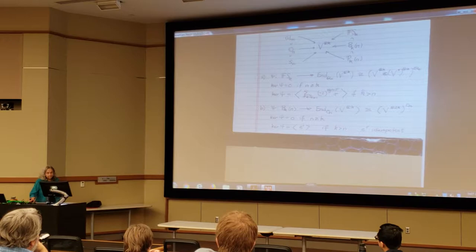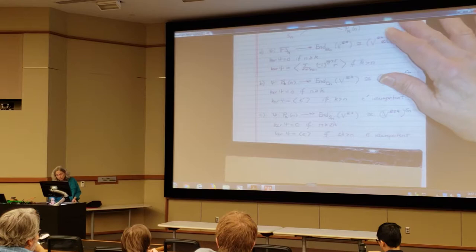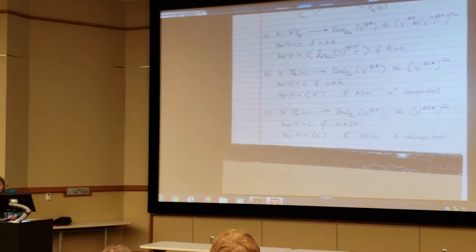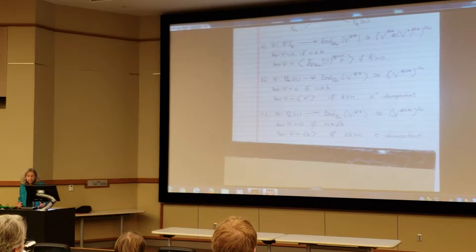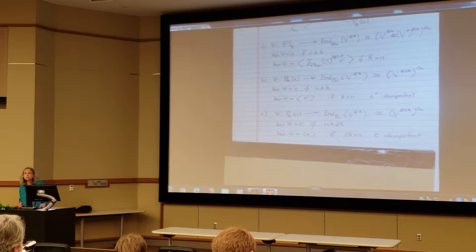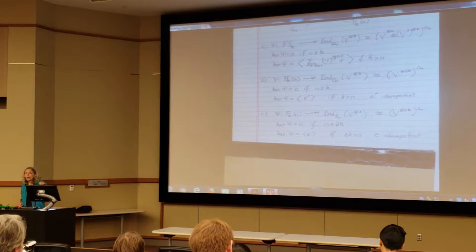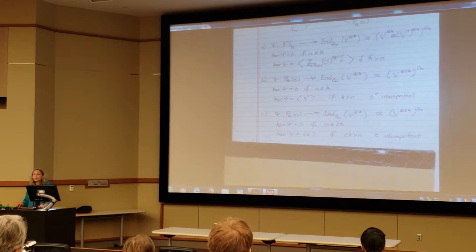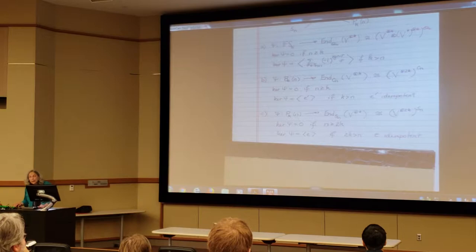What about the partition algebra case? Well, a very similar thing is happening. V is isomorphic to its dual here. And so when we're looking at the centralizer algebra, we're really looking at invariants of V tensor 2K under the symmetrical action. Now, this is a different action than we saw in the general linear case. Because in the general linear case, we're permuting the factors. And here, we're acting diagonally on the tensor factor. So the kernel is zero if N is greater than or equal to 2K here. And that's one of the complications. And it's generated by an idempotent if 2K is greater than N.